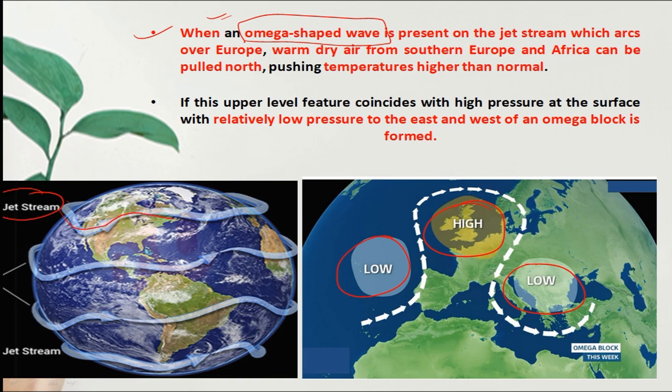The jet stream is normally running, but when omega blocking occurs, the high pressure zone becomes stationary. The separate and stable pressure systems remain in place.